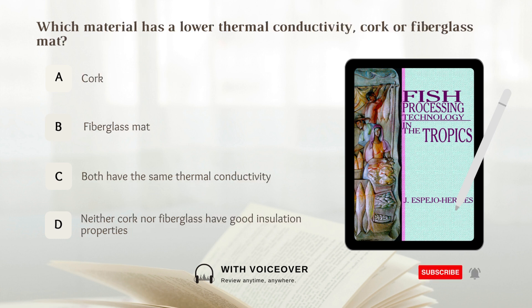Which material has a lower thermal conductivity — cork or fiberglass mat? Options: A. Cork. B. Fiberglass mat. C. Both have the same thermal conductivity. D. Neither cork nor fiberglass have good insulation properties. Answer: B. Fiberglass mat.